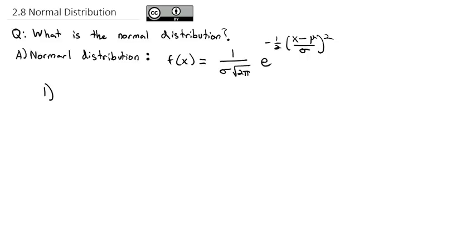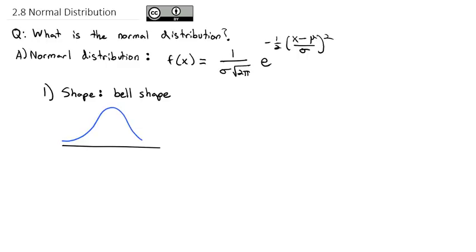What you should know about the normal distribution is its shape. Just like the uniform distribution has a clear rectangular shape, the normal distribution has a clear bell shape to the curve. If this is my x-axis, the normal distribution is a bell-shaped curve where the mean of the distribution falls right in the middle.